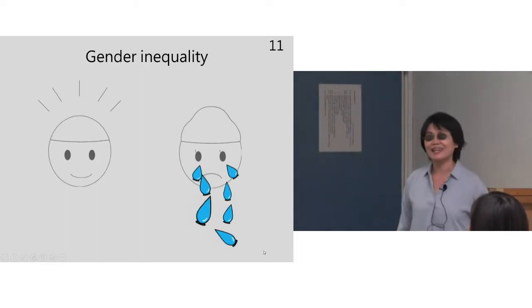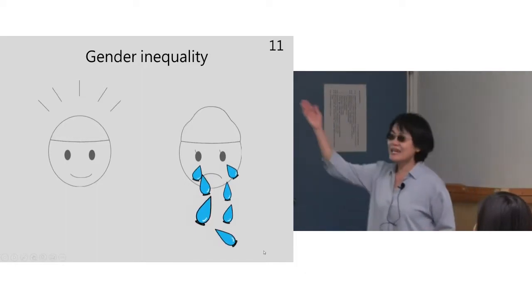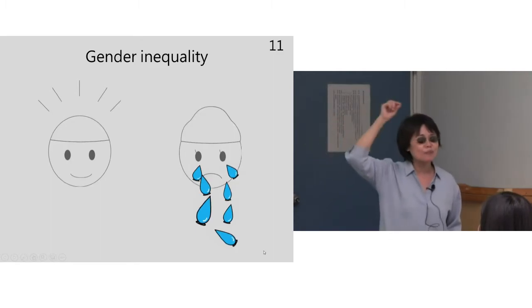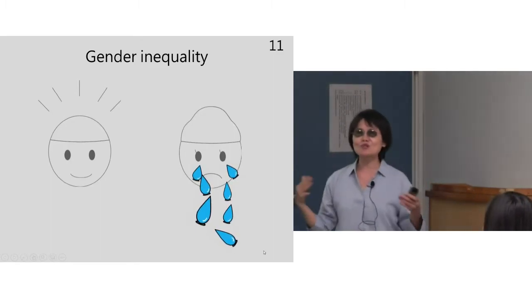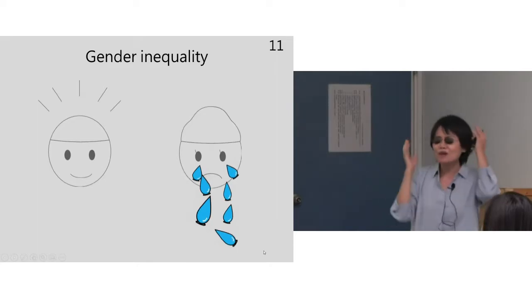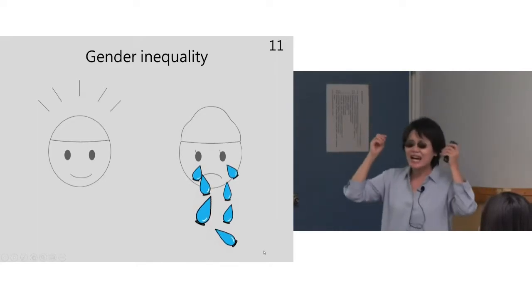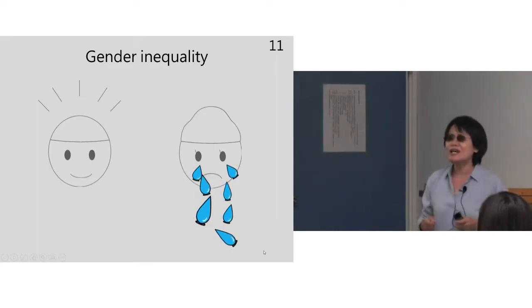But you know it takes a guy only two seconds to put on the cap. But for female swimmers like me, we have to struggle with my hair, the silicon cap and goggles. So this gender inequality failed me in the first place.